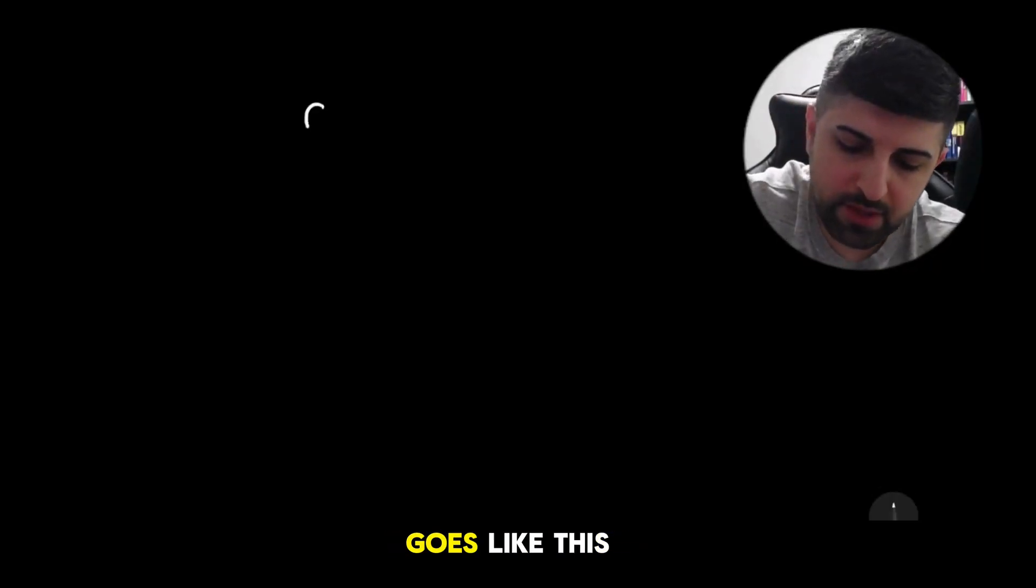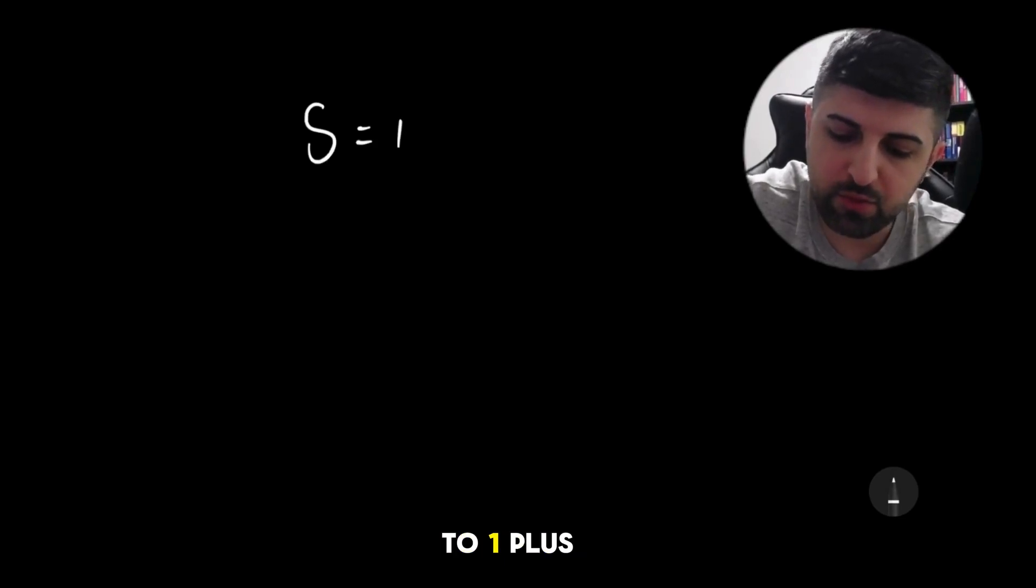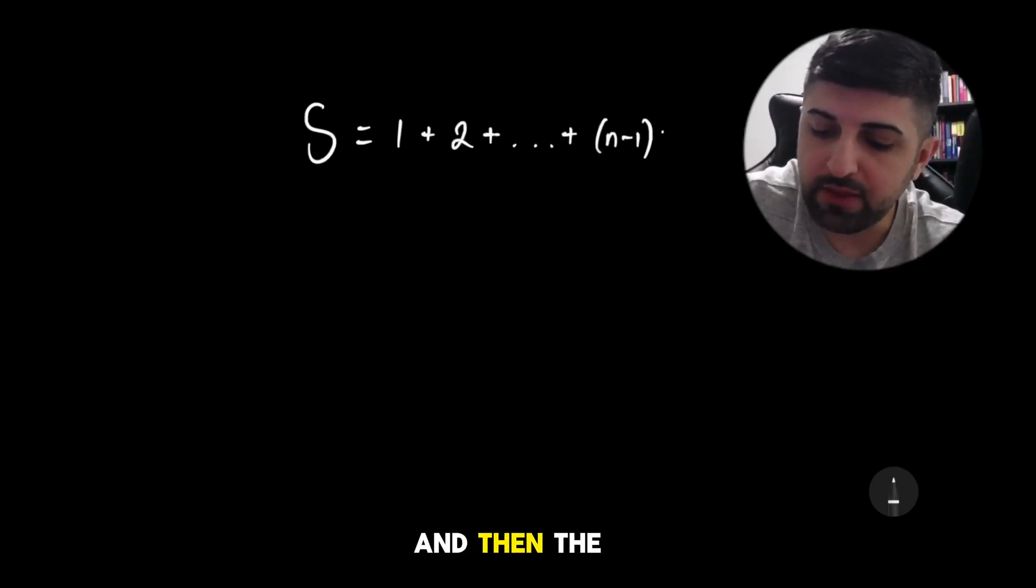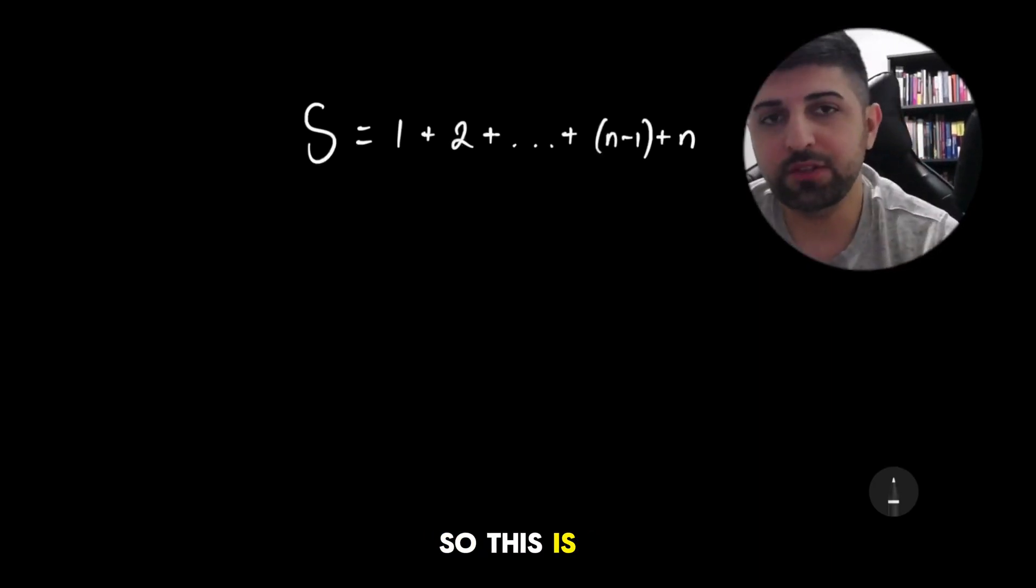There is actually a way. Let's start with the general sum. It goes like this: S is equal to 1 plus 2 plus, and I keep adding until I get to n minus 1, and then the last term n. So this is the general sum.